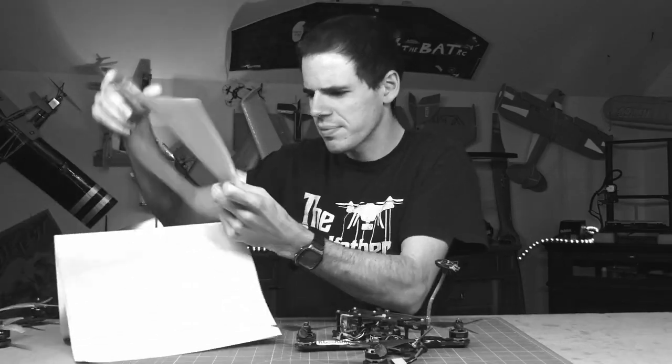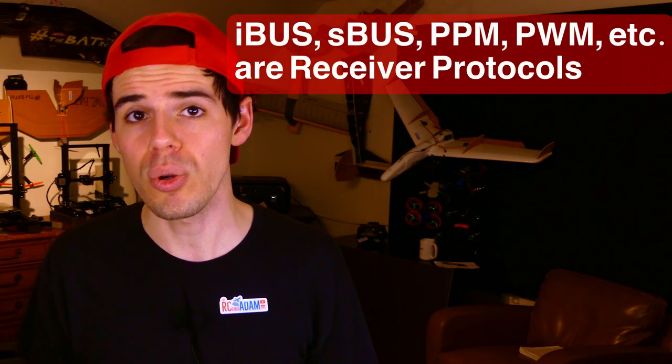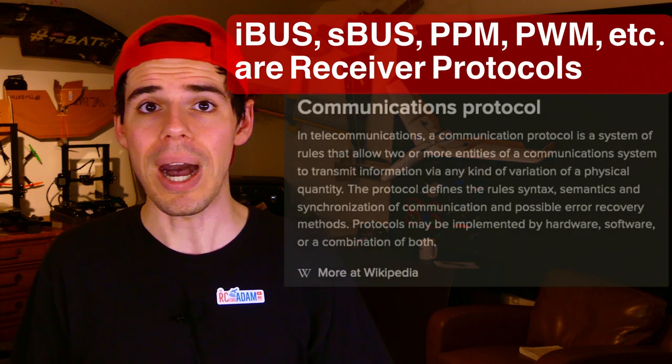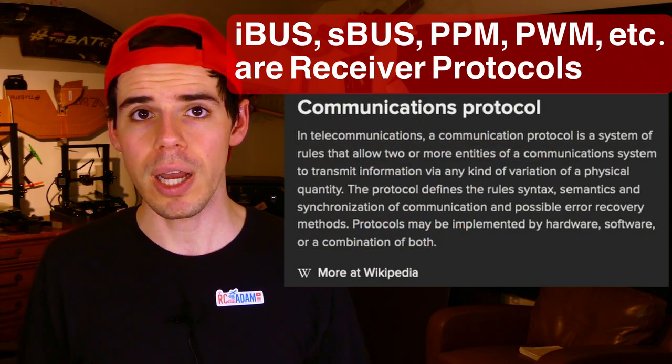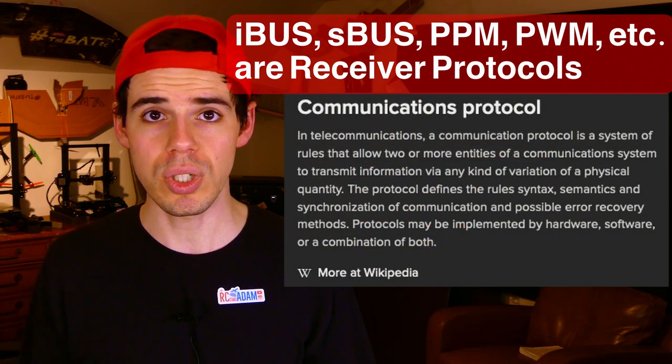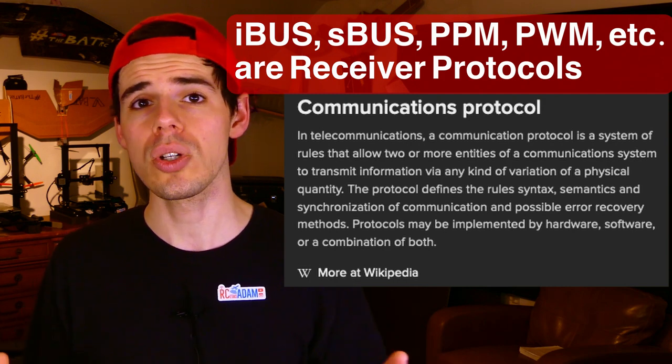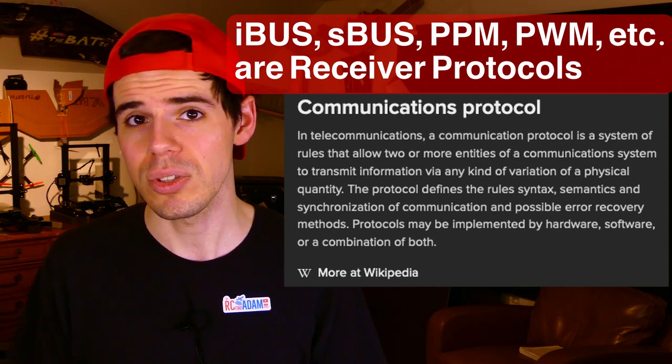Now maybe you're just getting started in the FPV drone stuff, you're setting up your receiver and you're wondering: what is this iBus, SBus? I don't understand which one to choose. Well, those are called receiver protocols. So iBus, SBus, XBus, Crossfire, Spectrum — all those are called receiver protocols.